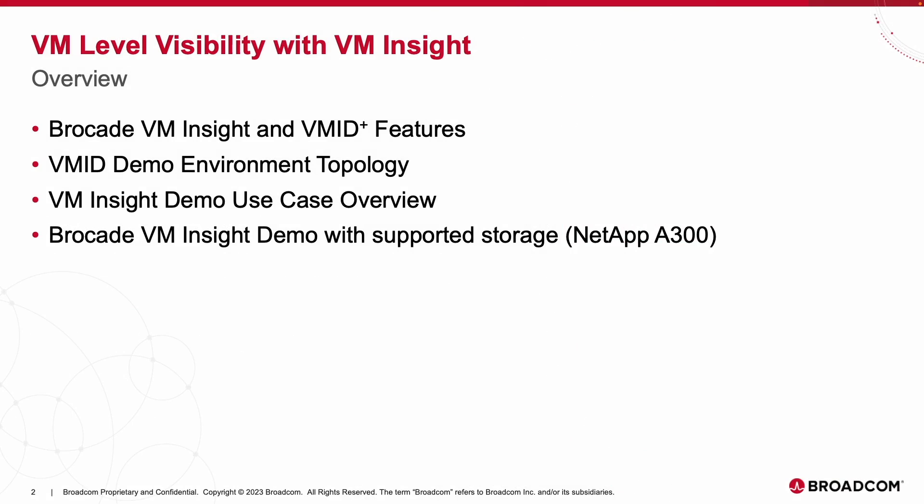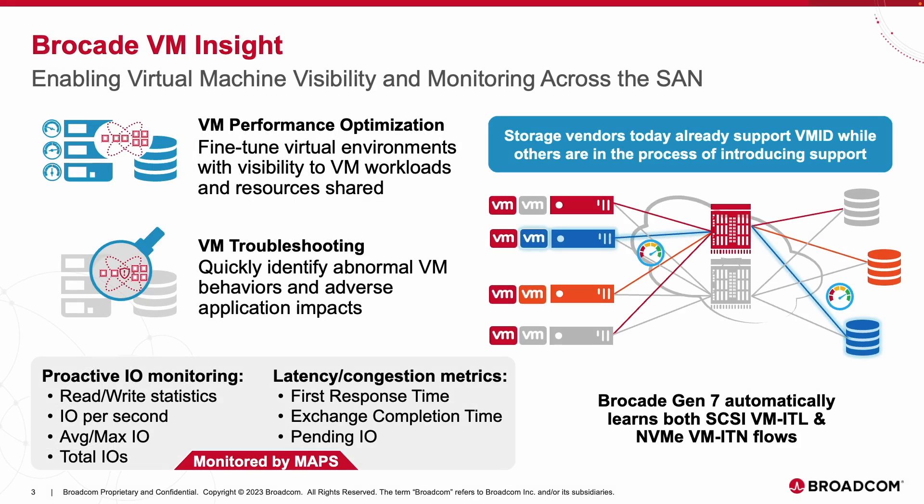We will get familiar with our VM Insight demo environment by going over the topology and use case scenario prior to showing it in action. Brocade VM Insight enables an additional level of visibility for virtualized environments, allowing for telemetry to be captured from the individual VM on an ESX server all the way down to the storage LUN or namespace the VM is communicating with. Users can begin identifying individual VMs that may be experiencing abnormal behaviors, even if they are utilizing a shared physical path with other VMs. Brocade tracks, monitors, and alerts users on various VM-level metrics through our Monitoring and Alerting Policy Suite, also known as MAPS, helping drastically improve troubleshooting capabilities to easily identify root causes for quicker problem resolution.